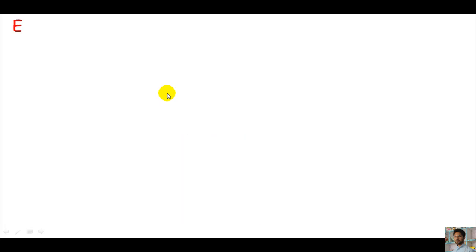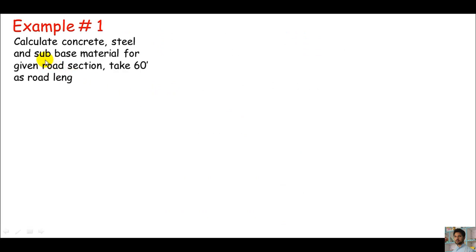We will do a few examples. In the example, we are asked to calculate concrete, steel, and sub-base material. The length of road is taken as 60 feet. We are also informed to ignore any type of joints.